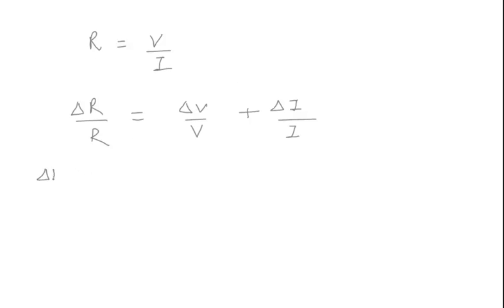In terms of percentage, delta R by R times 100 will be percentage error in this which is 3 and percentage error in this which is also 3. So 6% is the percentage error in the calculation of resistance R.